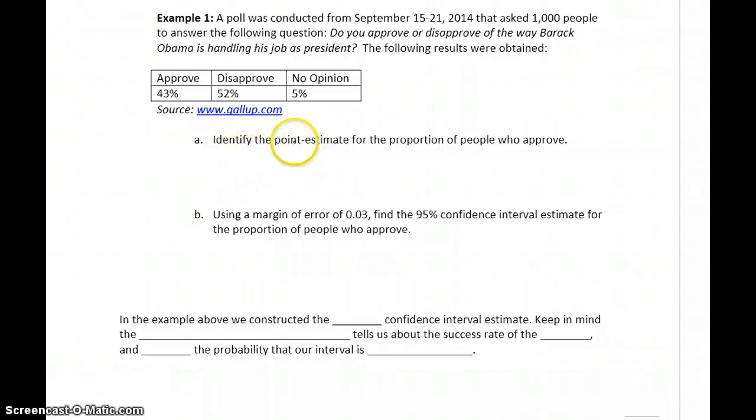The first thing we want to do is identify the point estimate for the proportion of people who approve. Point estimate changes depending on what we're dealing with, if we're talking about averages or variation. In this case, we're talking about proportions. So our point estimate, our sample proportion, is going to be the 0.43 people who approve of the job he's doing.